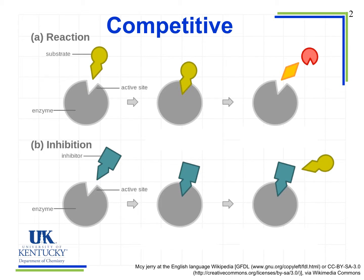Some medications use this model — they inhibit an enzyme and therefore stop, say, a bacteria from growing, stopping that bacteria from reproducing and reducing infection. Different medications behave in different ways in the body; not all do this, they all have their own mechanism. But this is one way we can inhibit the duplication of bacteria and stop an infection. The inhibitor comes into the active site — notice the same shape on both species — and blocks the actual substrate from entering, preventing the reaction. Sometimes this is used beneficially with medication, and sometimes non-beneficially when a foreign species inhibits a critical reaction.